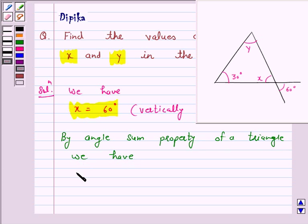y plus 30 degrees plus x is equal to 180 degrees. This implies y plus 30 degrees plus 60 degrees is equal to 180 degrees.